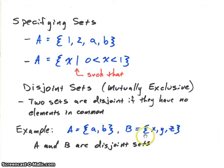If, however, we had, say we had x in B and also in A, then those two sets would not be disjoint sets.